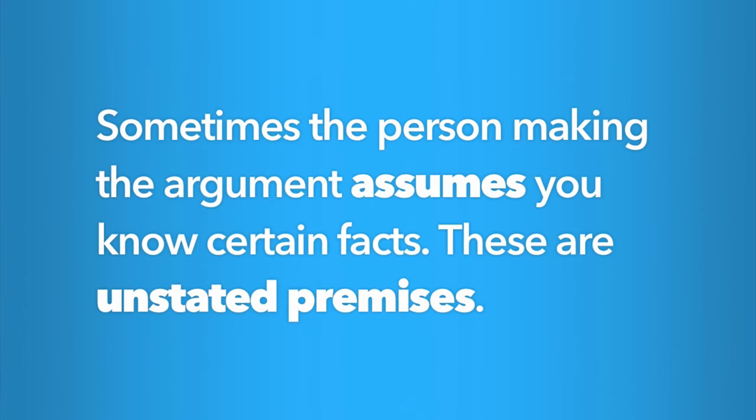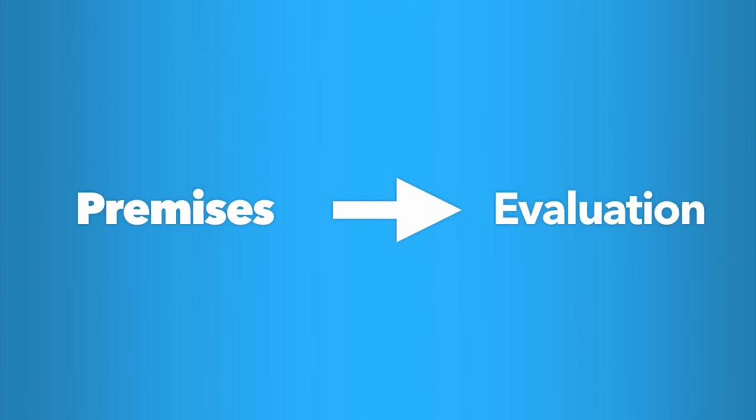In addition, there are sometimes unstated or implied premises. The person making the argument may leave out a fact or reason, assuming that you already know that fact or that it will be taken for granted. You'll learn more about these unstated premises later. Once you've identified the premises, you will then need to evaluate their truth or strength. We'll talk more about how to do this in later modules.